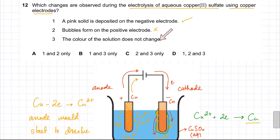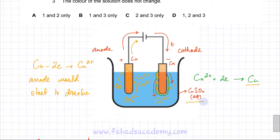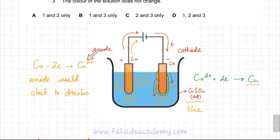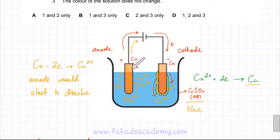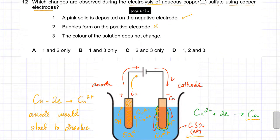The third statement says the color of the solution does not change. Copper sulfate solution is blue due to Cu²⁺ ions. At the cathode, Cu²⁺ ions are consumed to deposit copper. Simultaneously, at the anode, copper metal dissolves to produce Cu²⁺ ions. These two processes balance each other, so the concentration of Cu²⁺ ions remains unchanged and the blue color of the solution stays the same. The third statement is correct.